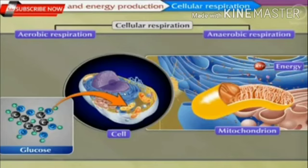Cellular respiration occurs in living organisms by two methods. First, aerobic respiration, and second, anaerobic respiration. Let us learn each method one by one.